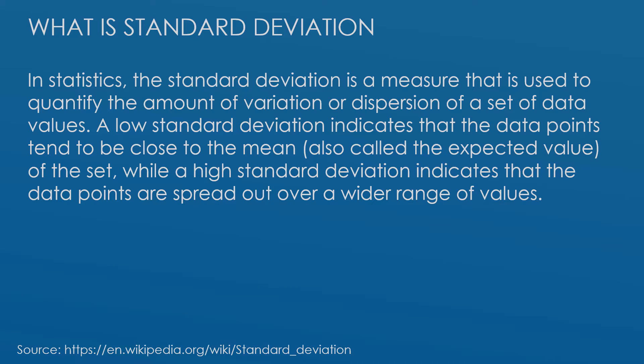A low standard deviation indicates that the data points tend to be close to the mean (also called the expected value), while a high standard deviation indicates that the data points are spread out over a wider range of values. So in other words, standard deviation explains how close a data point is to the overall average.